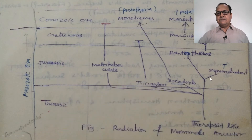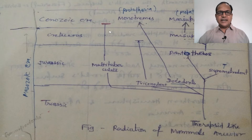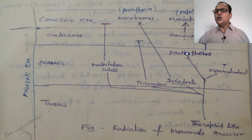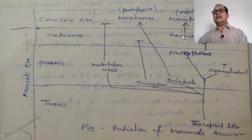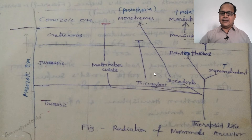The evolutionary tree shows a therapsid-like mammal ancestor at the base, with five lines radiating from this basic ancestor line. Multituberculates became extinct in the Cenozoic era. Triconodonts became extinct in the Cretaceous period, and Diconodonts survive today in the form of monotremes. The Pantotheres bifurcated into marsupials and placental animals — marsupials giving rise to metatherians and placentals giving rise to eutherians. Symmetrodonts did not flourish and became extinct during the Jurassic period.